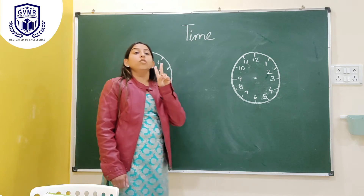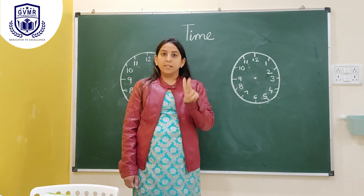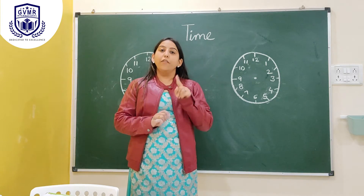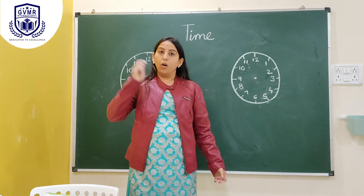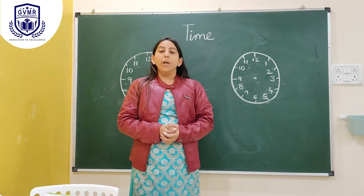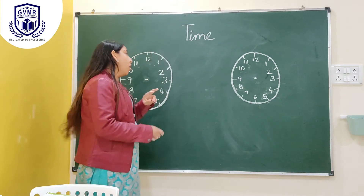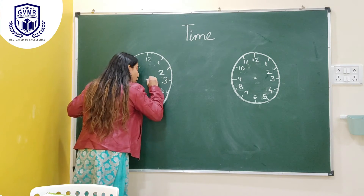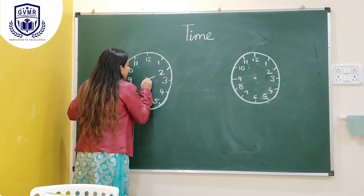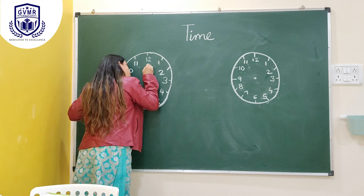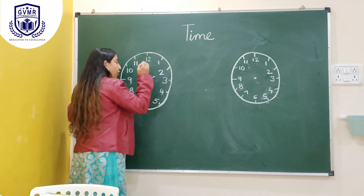It has two hands — one short and one long. How many hands are there in a clock? Two hands. One short and one long.